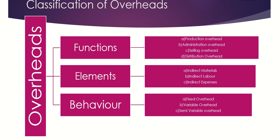Both selling and distribution costs are incurred after the production work is over, and thus taken together these are known as after production cost. So selling and distribution overheads are basically termed to be after production cost.